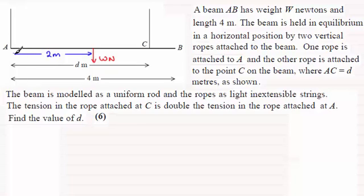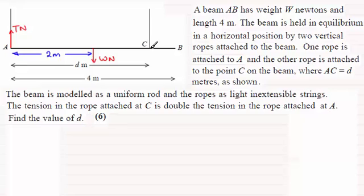There'll also be the tensions in the two strings at A and C holding this up. We're told that the tension in the rope attached to C is double the tension in the rope attached at A. So if I call this tension T newtons, then the one acting at C will be twice that — 2T newtons. So we've got all the forces now acting on the beam.